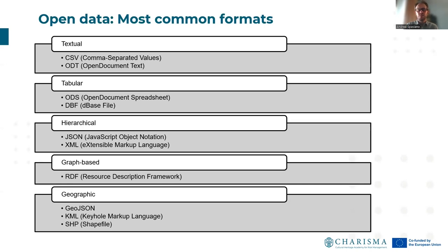Open data respects specific standards that are worldwide recognized. In this slide, we list the most common formats you can find on web platforms. For example, we have textual open data such as comma-separated values or open document text. Tabular data such as open document spreadsheet or dBase file. Hierarchical data: GeoJSON or extensible markup language. Graph-based, such as resource description framework. And finally, geographic data — the most common formats are GeoJSON, KML, and Shapefile. Regardless of the format, data must be readable and usable with open source platforms and software.